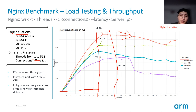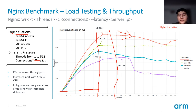From the graph, it's easy to see two things: first, Kubernetes will decrease throughput; second, ARM shows higher performance with its faster CPU. Thus, in high-concurrency scenarios, the x86 instance's performance decreases very fast.